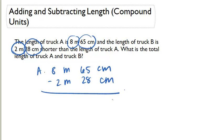Well, 8 minus 2 is 6 meters. 65 minus 28, we'll change this to 15, this to 5.